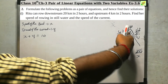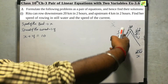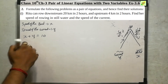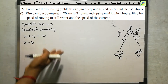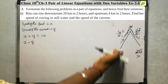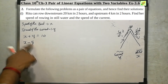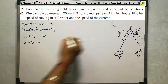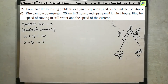For upstream, boat speed minus current speed gives us x minus y. The current slows the boat, so boat speed minus current equals 2 kilometers per hour. So x minus y equals 2. Now both equations are ready.